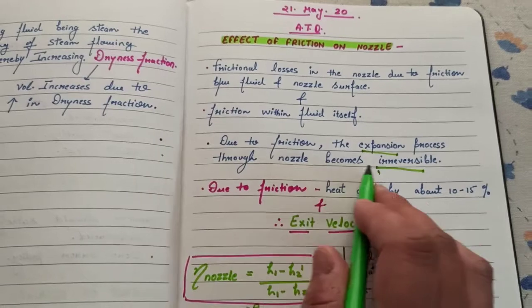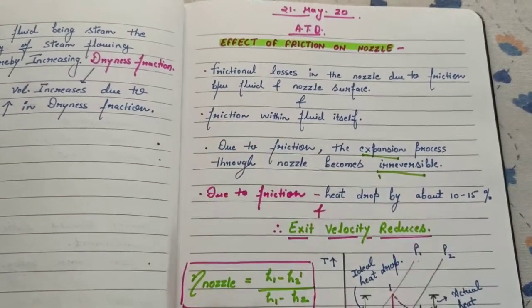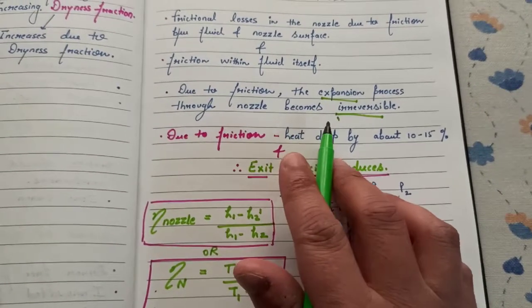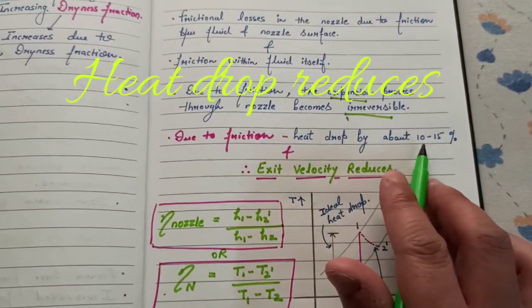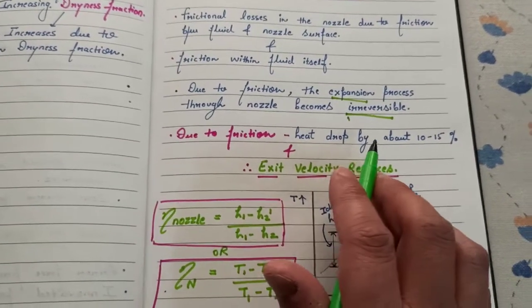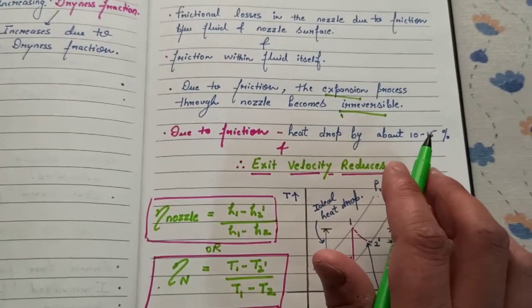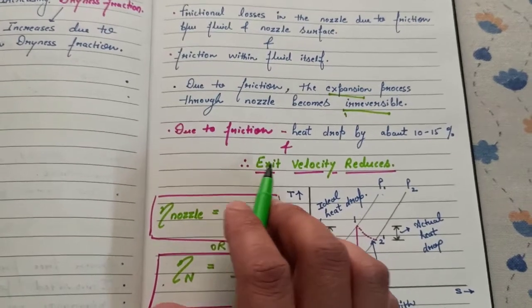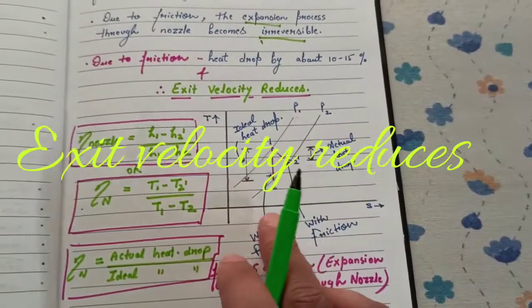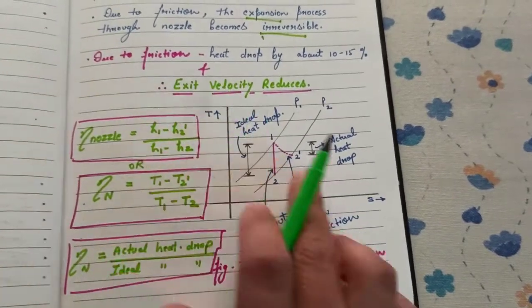Due to friction, the heat drop reduces by 10 to 15 percent and exit velocity also reduces. This is the graph of a TS diagram. It shows the expansion of gas through the nozzle.